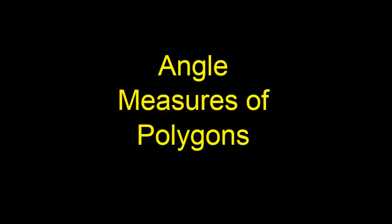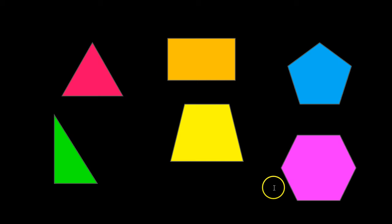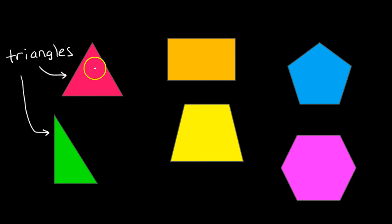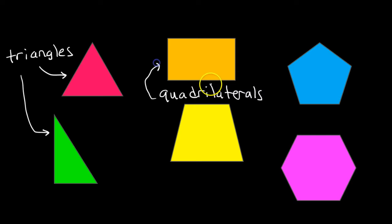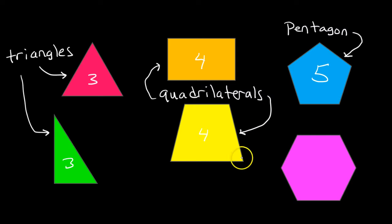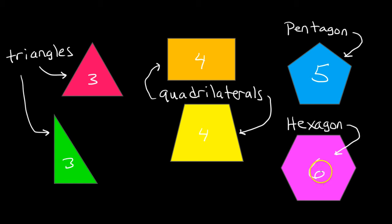This lesson is about angle measures of polygons. Here are some examples of polygons of the types we will be dealing with. We've got a couple of triangles. Four-sided figures are called quadrilaterals. A five-sided figure is called a pentagon. A six-sided figure is called a hexagon.